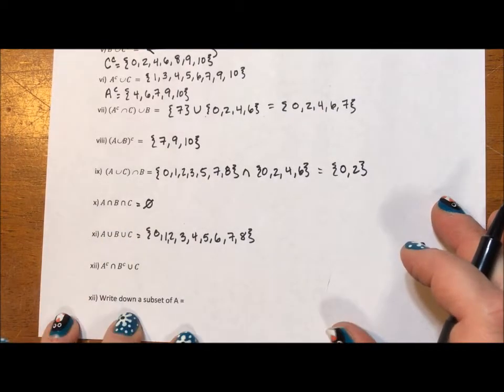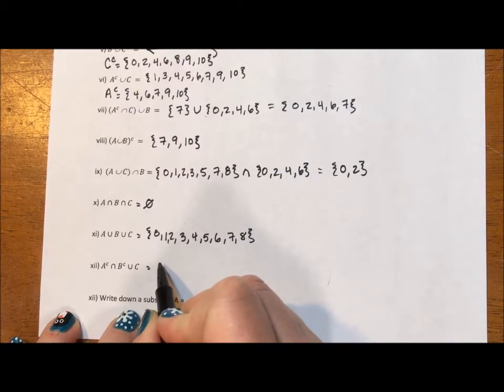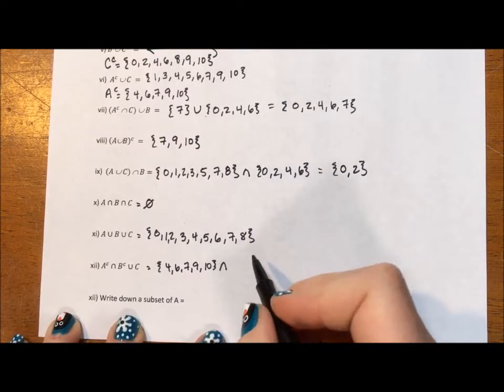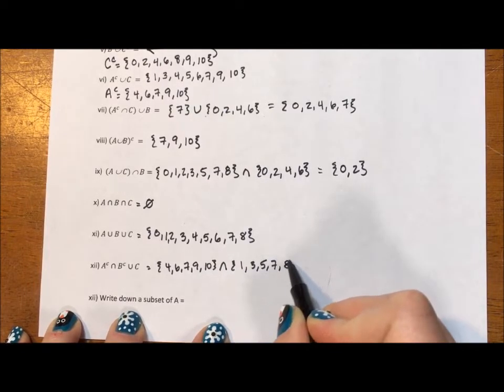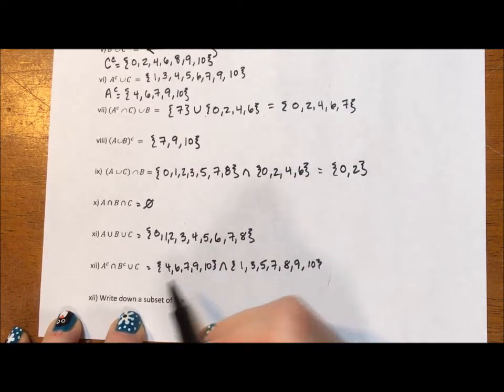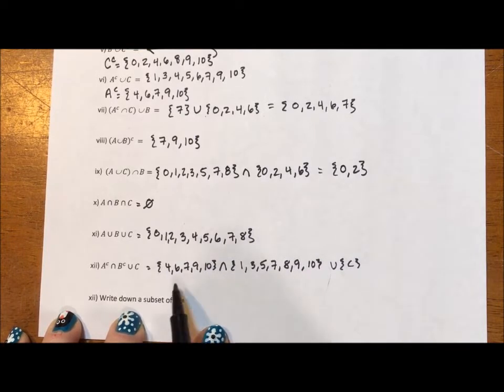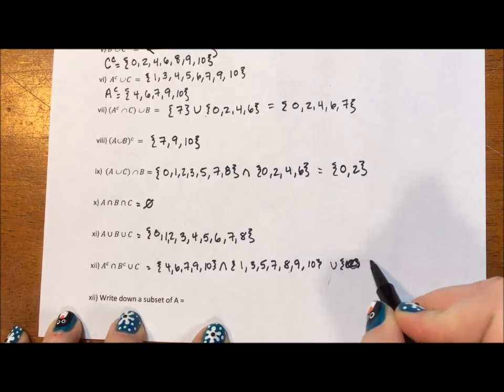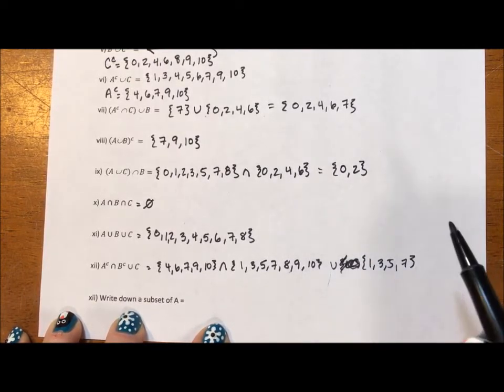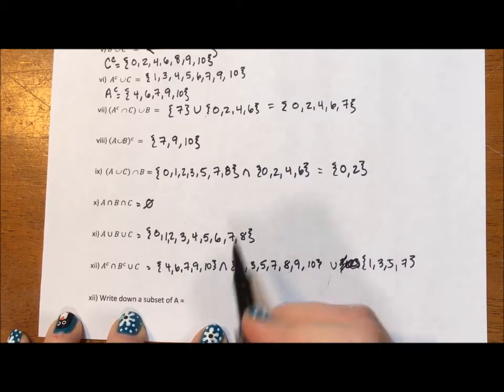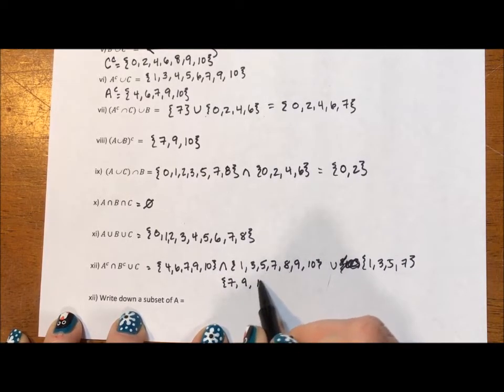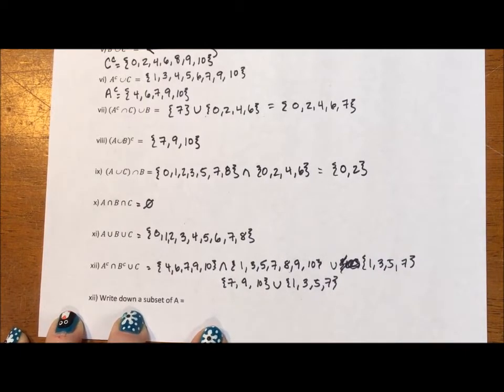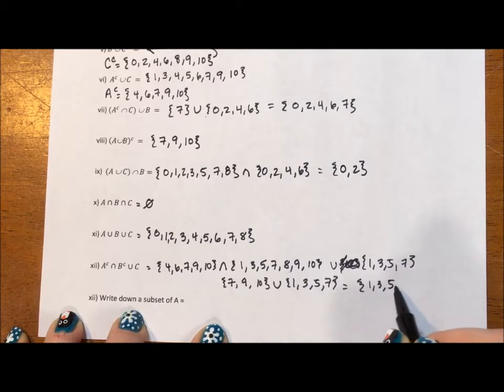This one's going to be a little more complicated. Complement of A. We've written the complement of A down. We'll just do it again. It's 4, 6, 7, 9, and 10. Intersection with the complement of B. We wrote the complement of B down. It's 1, 3, 5, 7, 8, 9, 10. We want the union C. Basically what this says is we want, reading this left to right, what's the same in these two with everything in C? I guess I should write out C. C is 1, 3, 5, 7. So let's see. 4, 6, 7, 9, and 10. 7, 9, and 10. United with 1, 3, 5, 7. And if we unite these two together, we have 1, 3, 5, 7, 9, and 10.